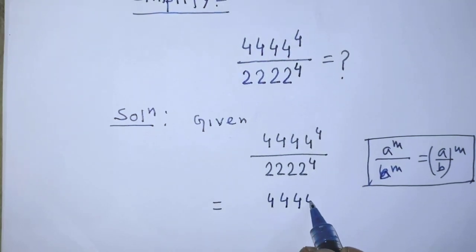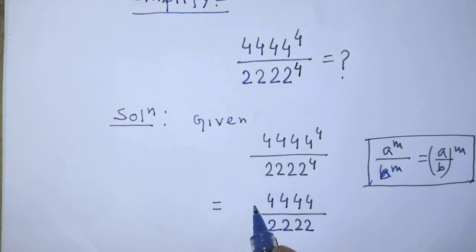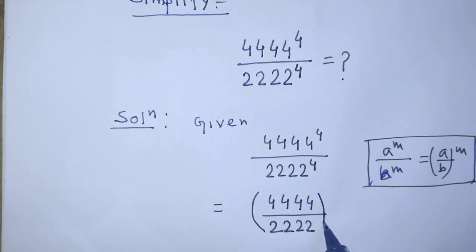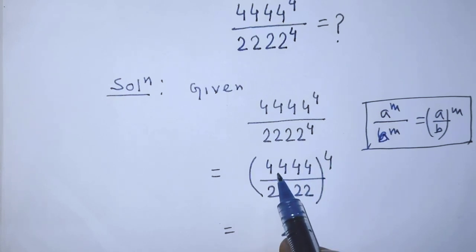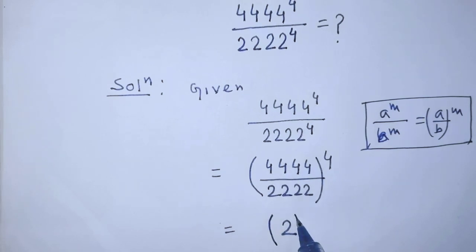In the place of base, here is 4444 over 2222. So guys, after calculation we can write in the place of base 2, and in the place of power again have to write 4.